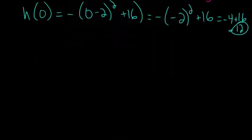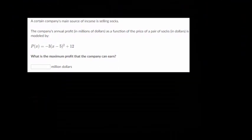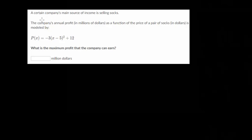So let's move on to another one. We'll do a couple more problems looking at the other two scenarios. A certain company's main source of income is selling socks. The company's annual profit in millions of dollars as a function of the price of a pair of socks in dollars is modeled by this equation.